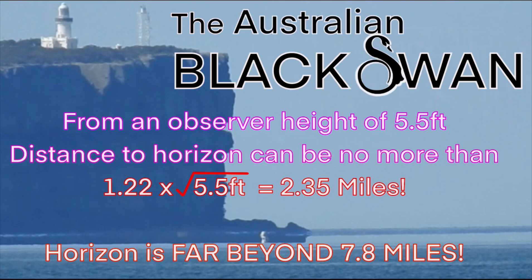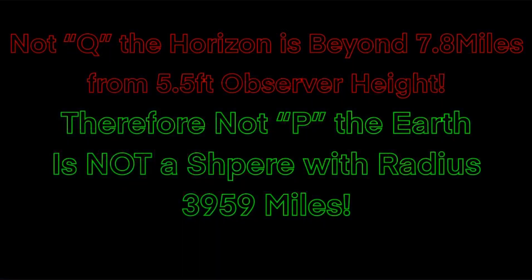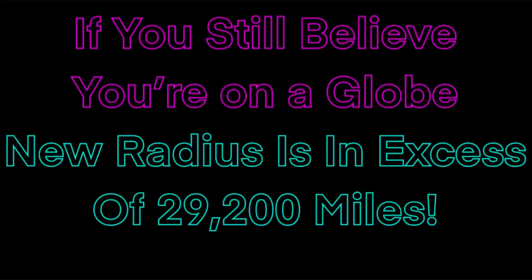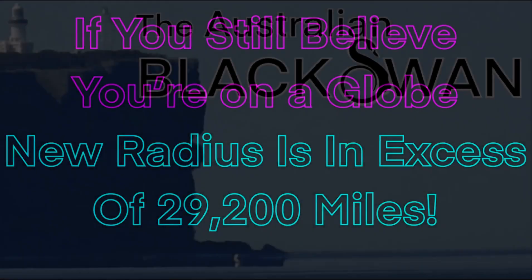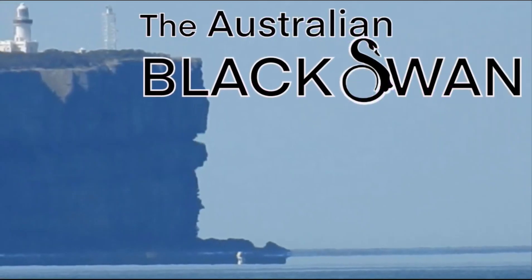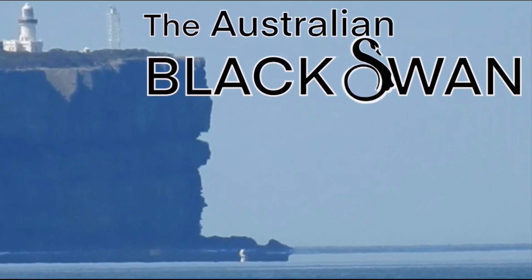So to complete the modus tollens: Not Q — the horizon is beyond 7.8 miles from a 5.5-foot observer height — therefore not P: the earth is not a sphere with a radius of 39.59 miles. But if you still believe you're on a globe, maybe it's just a bigger radius, which would be in excess of 29,200 miles. The Australian Black Swan has absolutely destroyed the globe.